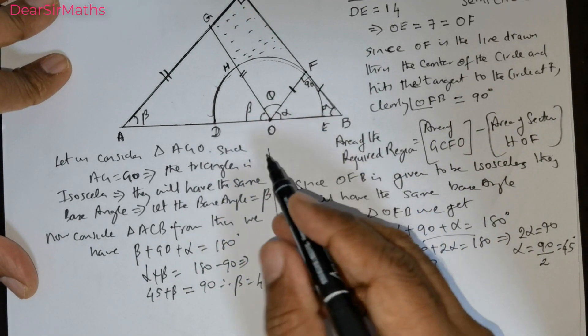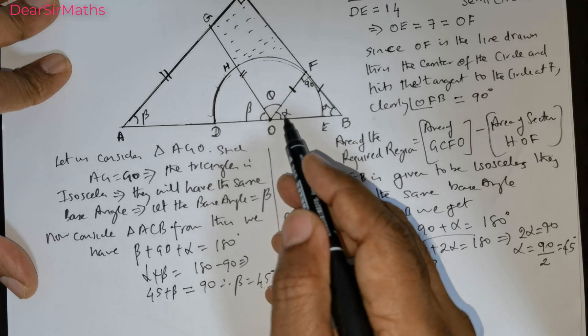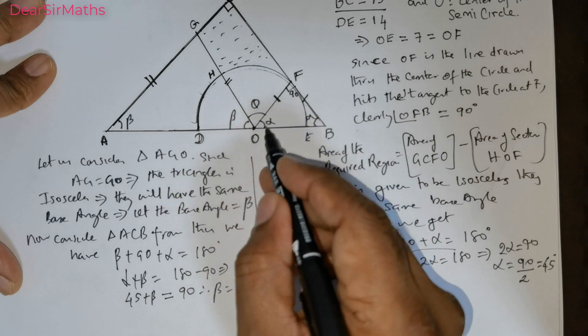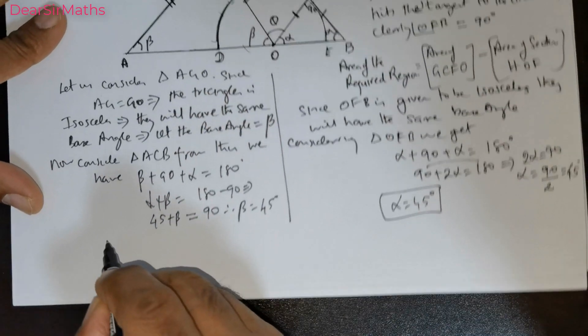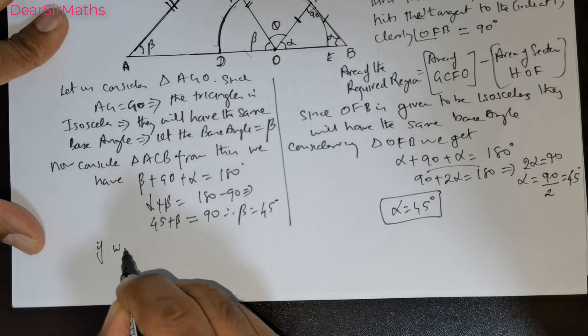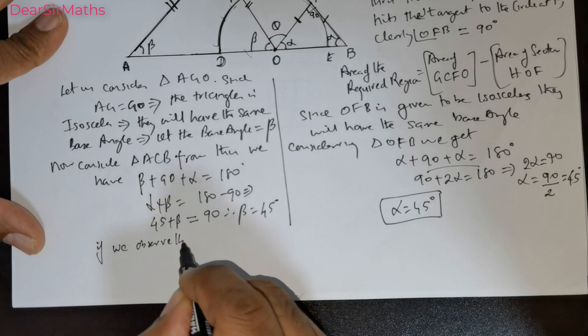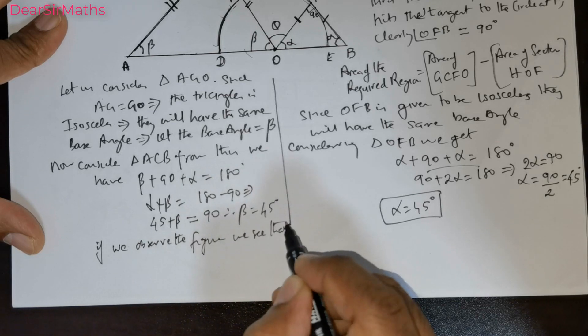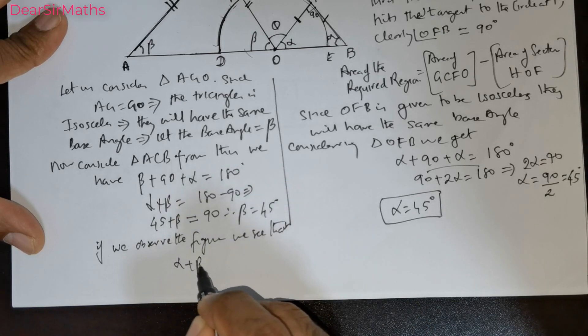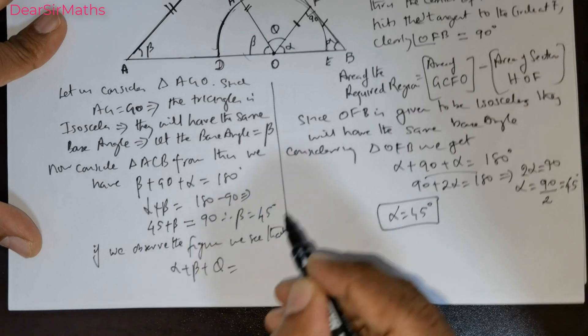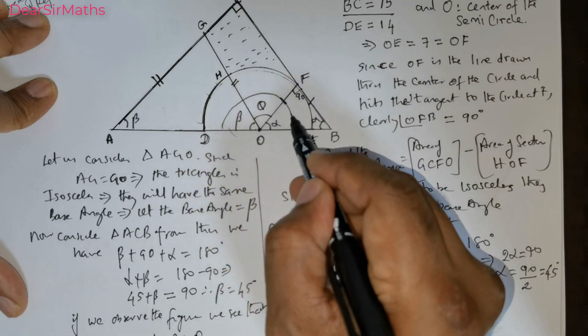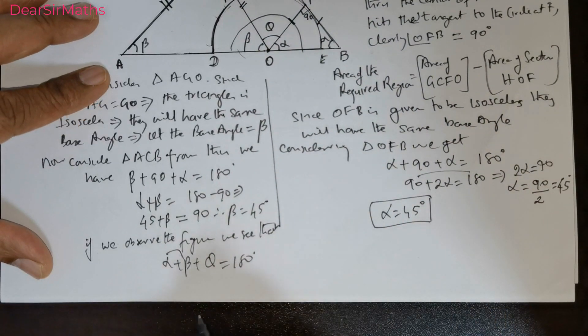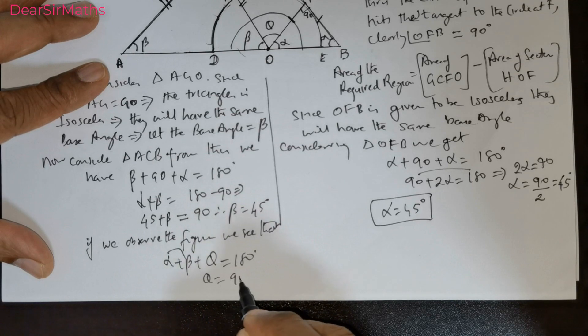Beta is 45, alpha is 45. From this figure, if I were to consider the angle, if we observe the figure, we see that alpha plus beta plus theta, this entire thing is going to be 180. But alpha plus beta is 90. So theta is equal to 90 degrees.